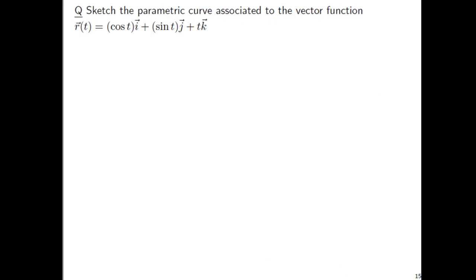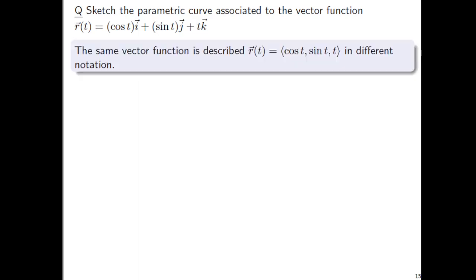Okay, let's sketch the parametric curve associated to the vector function r(t) equals cosine of t times vector i plus sine of t times vector j plus t times vector k. Now, this same vector function, instead of an i, j, k form, could be described r(t) equals angle bracket cosine of t, comma sine of t, comma t, close angle bracket. Right, that's the other notation, just trying to get you comfortable back and forth with i, j, k summation notation versus angle bracket.